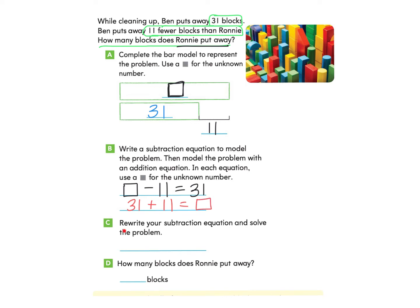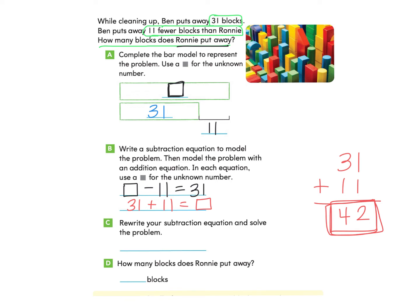Part C asks us to rewrite the subtraction equation and solve. I'll use the addition equation first: 31 plus 11. In the ones column, 1 plus 1 makes 2; in the tens column, 3 plus 1 makes 4. So the unknown number is 42. Now I rewrite the subtraction problem: 42 take away 11 equals 31. Ronnie puts away 42 blocks.